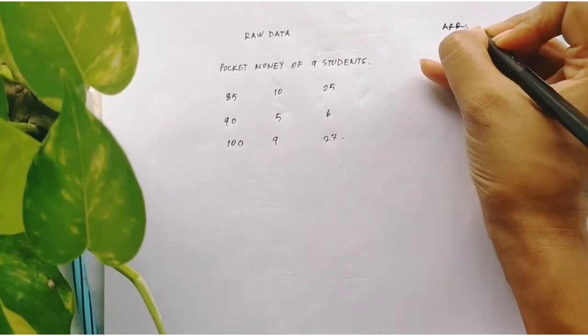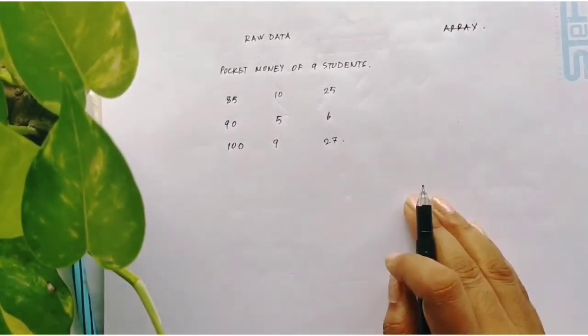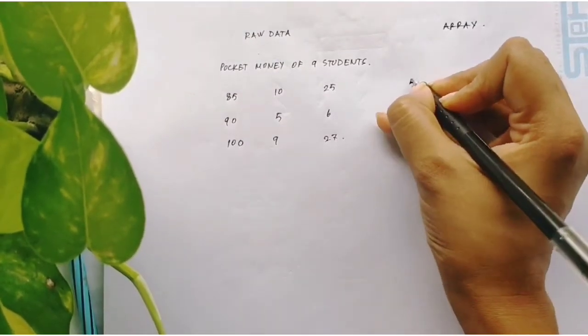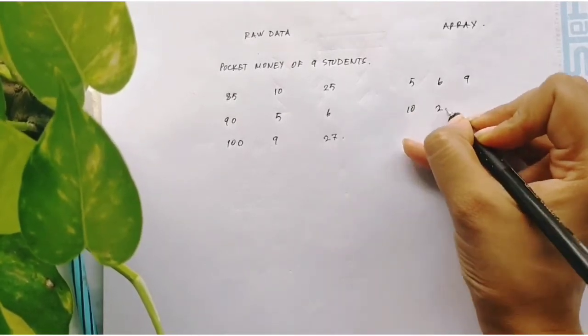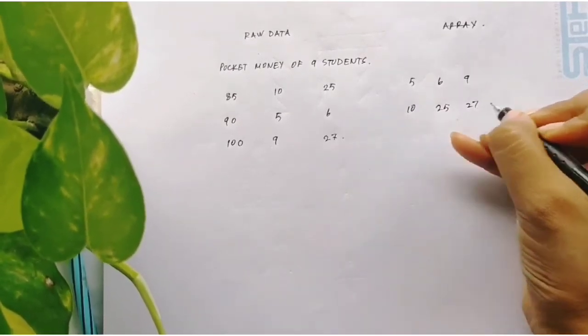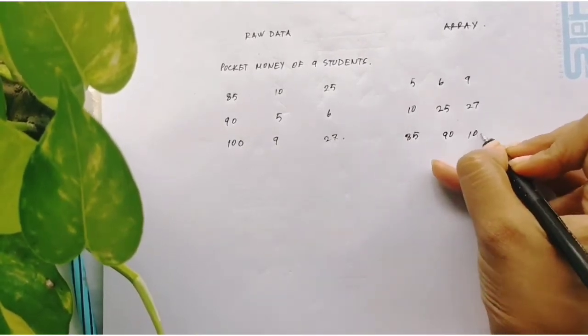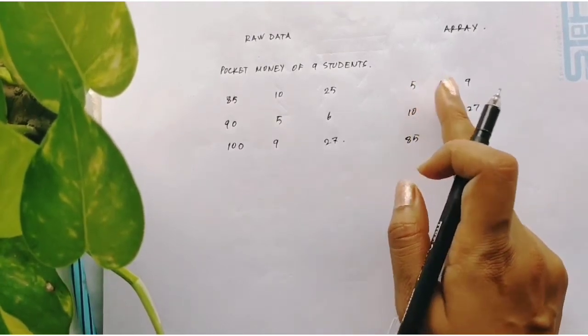On the contrary, when I arrange this raw data, they are called an array. How do I arrange? I can arrange them in ascending form. For example, I can arrange them like 5, 6, 9, 10, 25, 27, 85, 90, and 100. So they are increasing from smallest to the largest.